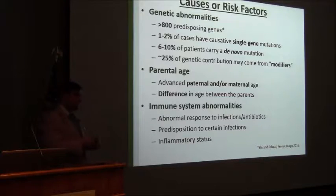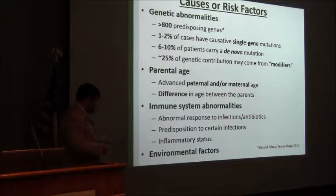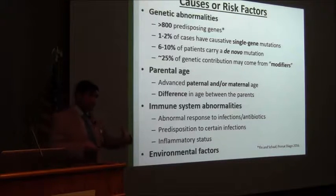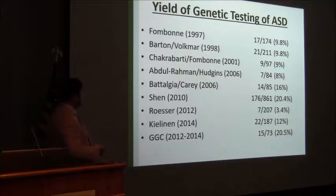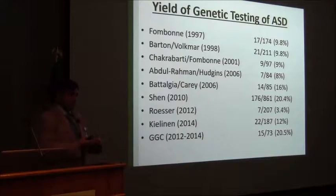The immune system abnormalities — do they have a genetic component? And of course, interaction with environmental factors such as diet and radiation. So genetic theory is the answer to better understand autism.